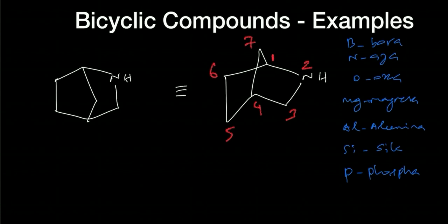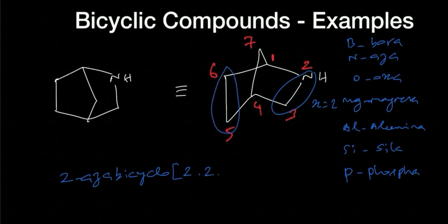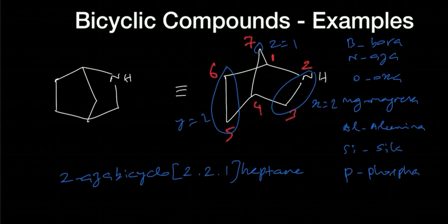So this would be 2-aza first, and then bicyclo. Then x is 2 — you should not exclude the nitrogen, you have to include it. So x is 2, y is also 2, and z is 1, and then heptane — because we are including nitrogen as part of the parent chain. Don't write it as hexane just because there are six carbon atoms; that would be wrong.